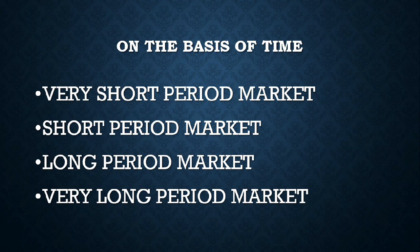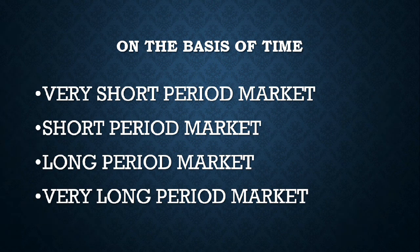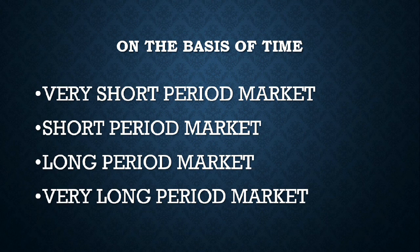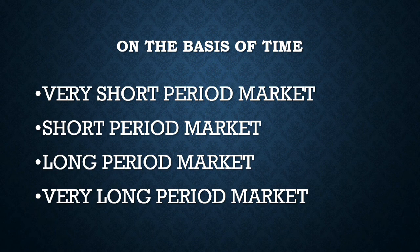The long period market is one where production can be increased or decreased to a large extent. The very long period market is the secular period of market. In this case, technology changes completely — for example, pin drives replaced CDs, CDs replaced floppies, and floppy disks replaced tape cassettes.